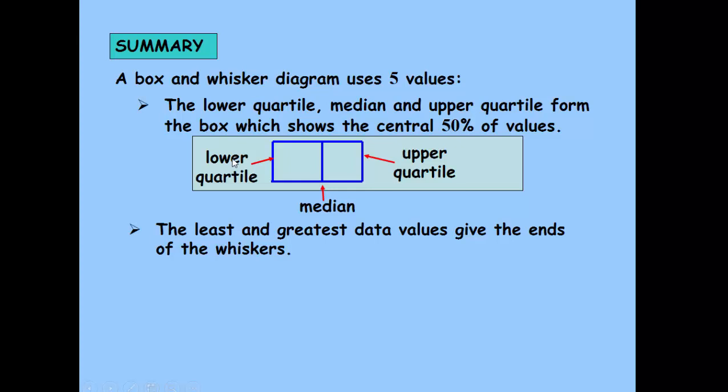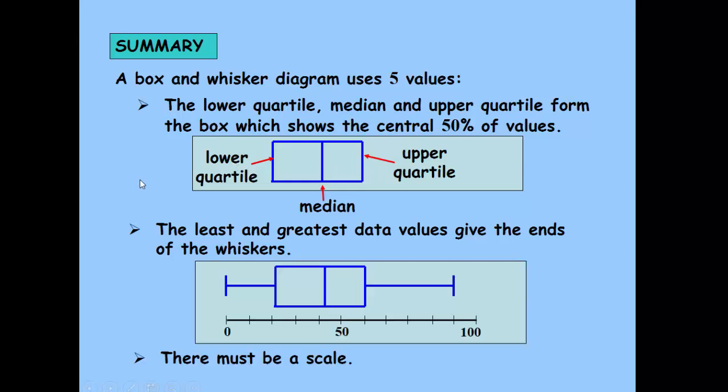So to summarise then, five values with the scale. There's your box and whisker plot.